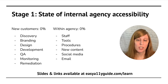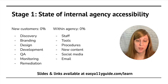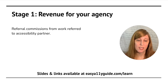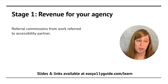At this stage, your internal agency accessibility is at zero. You're not doing it with any work on new or existing customers, and you don't have anything within your agency for it. The way to grow revenue for your agency is when you identify a project that is going to need accessibility, you refer it out and get a commission from your accessibility partner, such as the Easy Alley Guide.